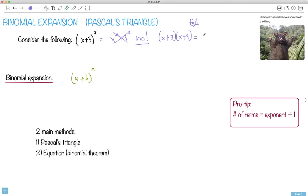So first times first gives you x squared. Outside, x times 3, gives you 3x. Inside, 3 times x. And last, it's 3 times 3, which is 9. Now I can collect terms. So that gives me x squared. And look, these two I can mix together, so that gives me 6x plus 9.